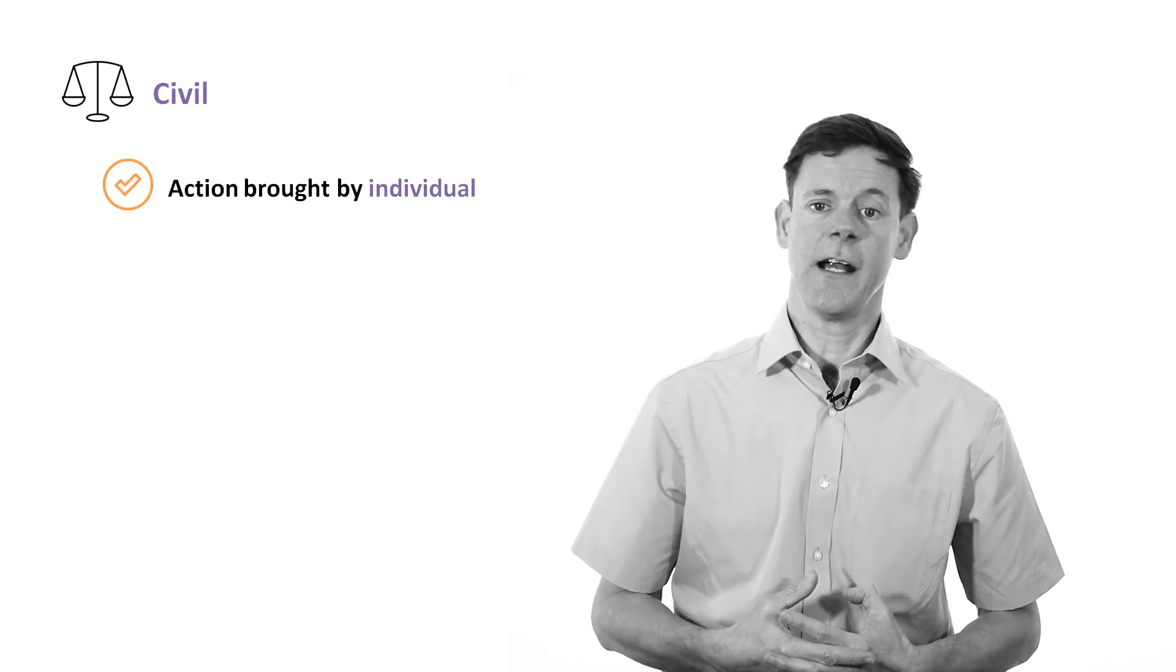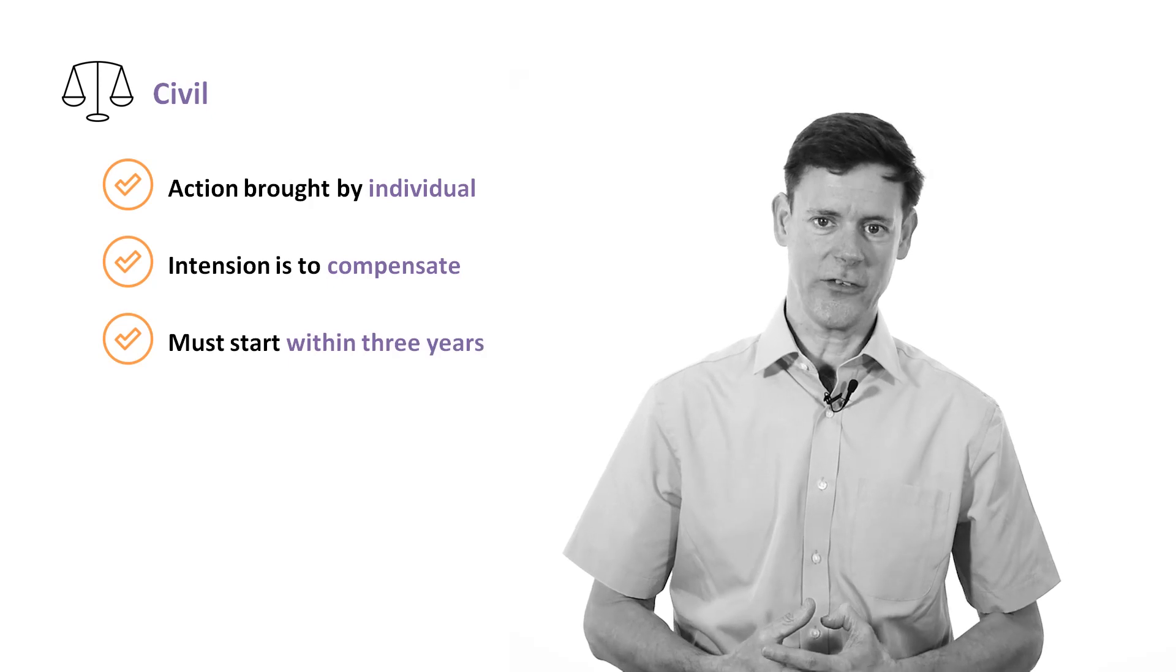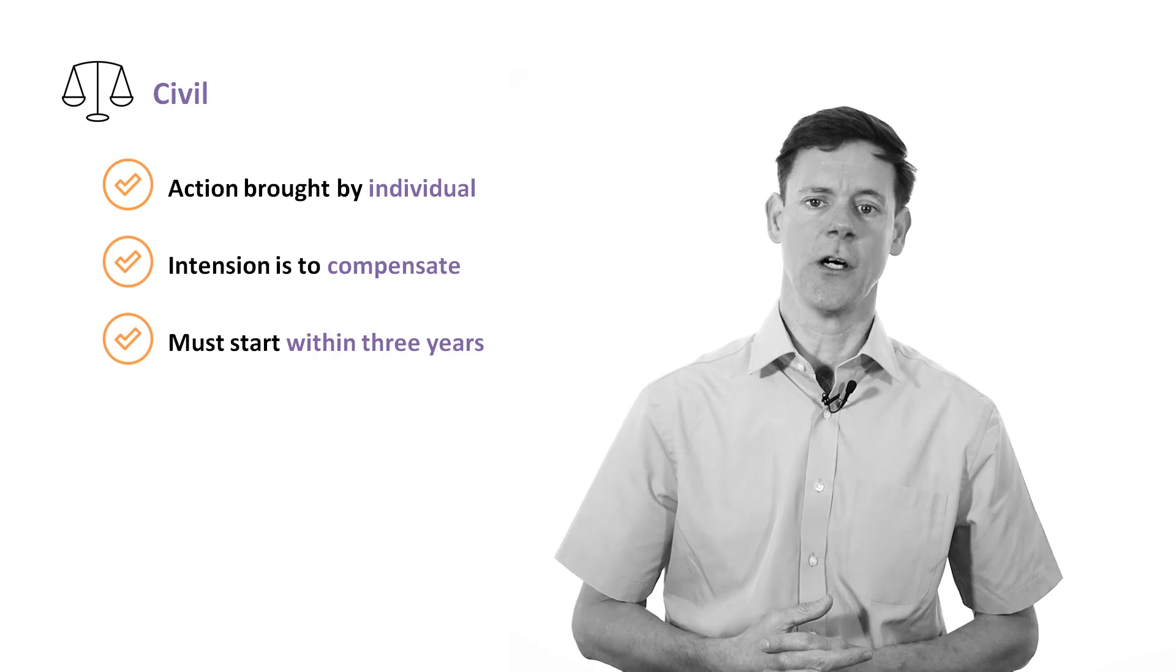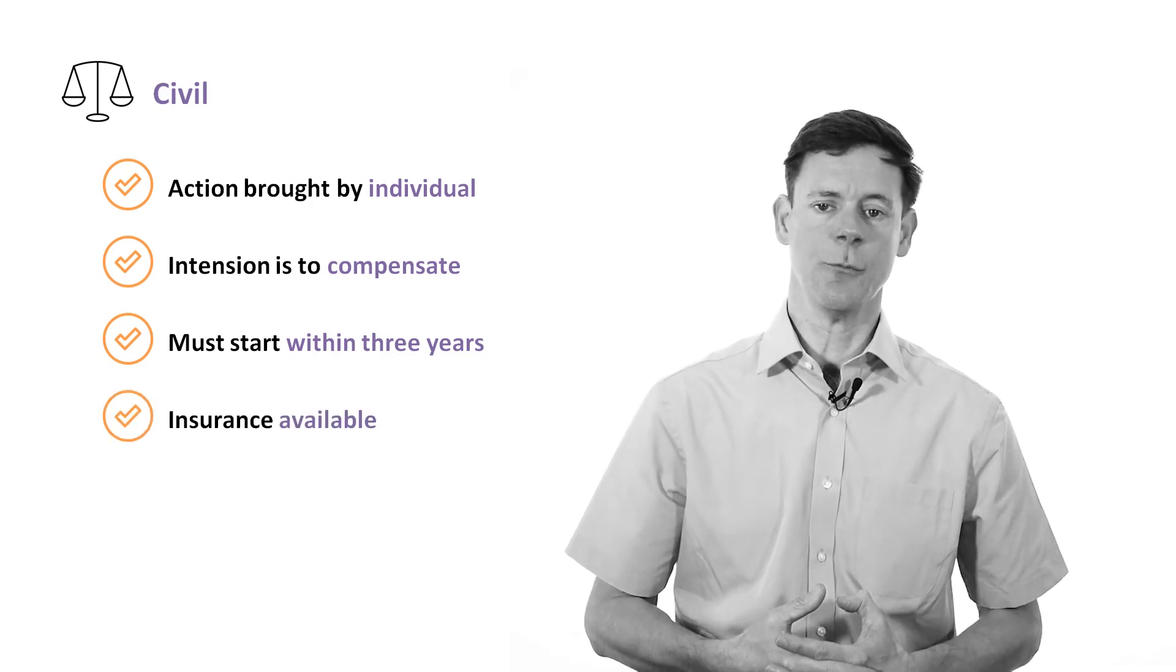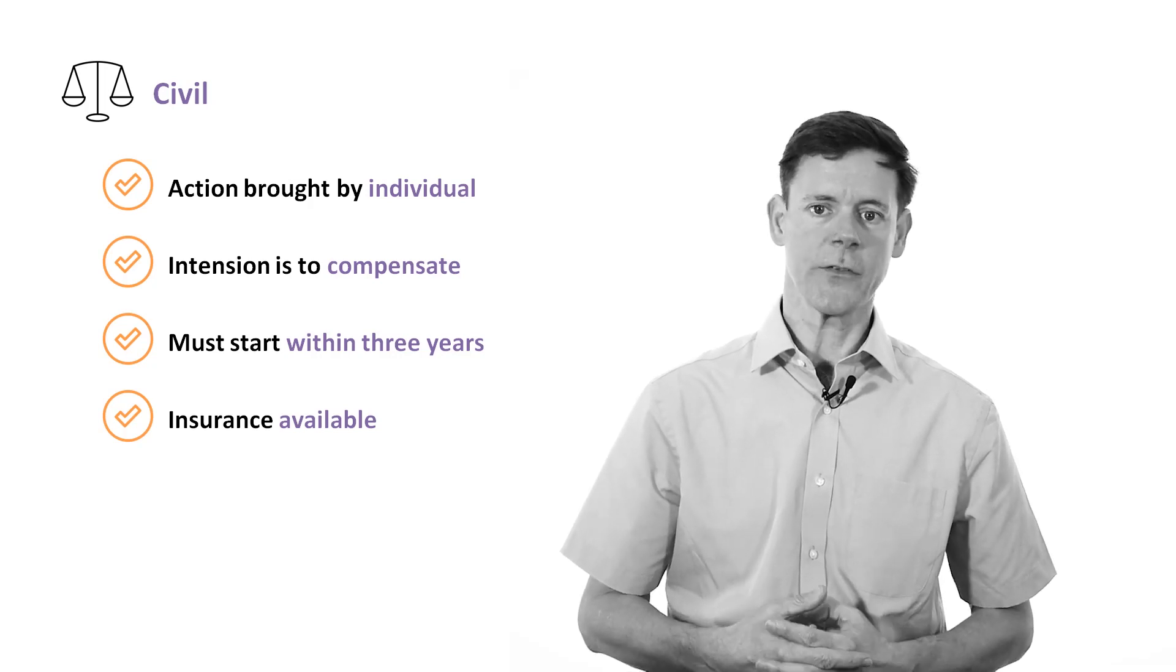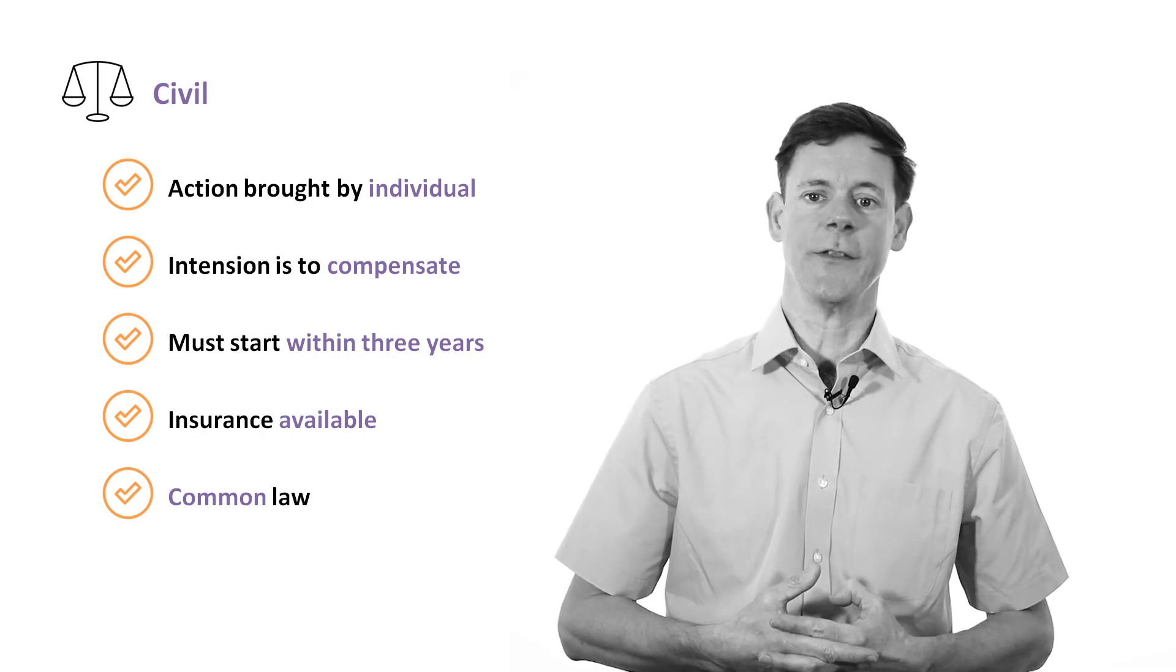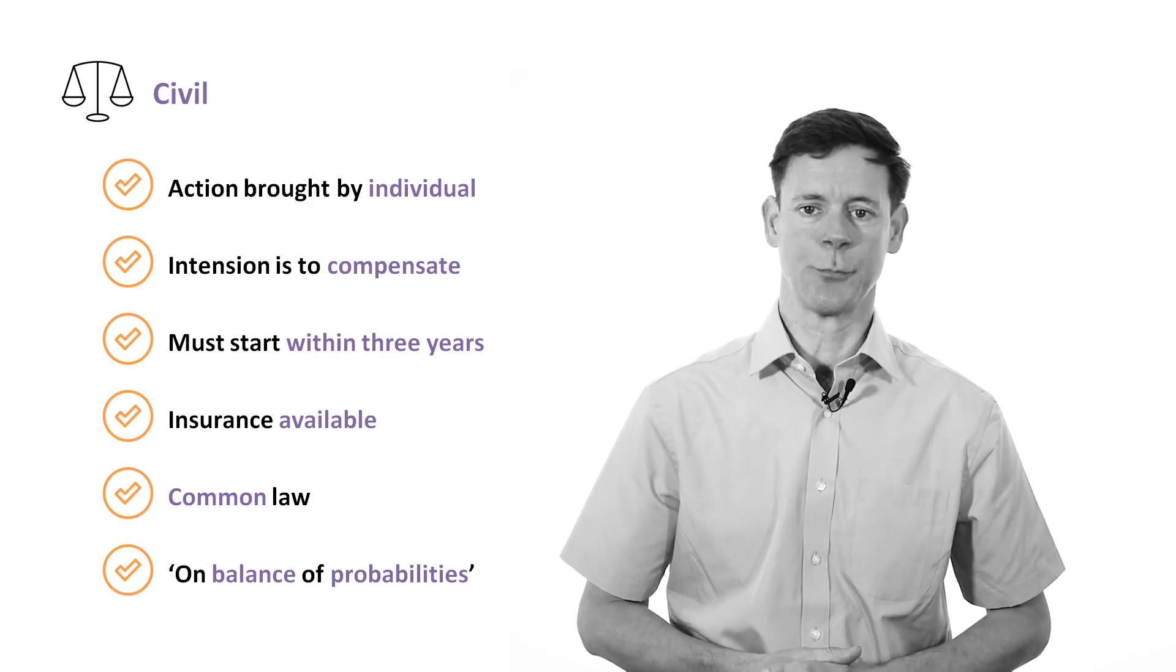In contrast, the civil legal system has different characteristics. The civil action is brought by the individual concerned. They're in pursuit of compensation. They have three years to bring their claim for compensation. That's three years from the date of injury. Three years from when they're diagnosed with an occupational health. And insurance is available to the employer to pay the compensation. The civil legal system is very much based on common law principles. And the burden of proof rests with the claimant to prove their case on balance of probabilities.